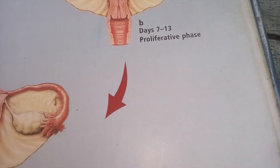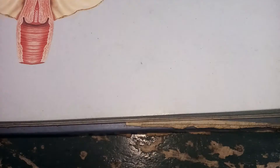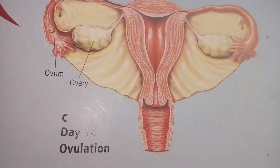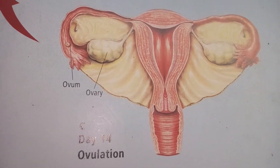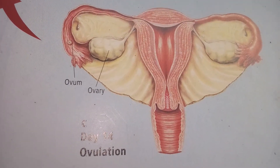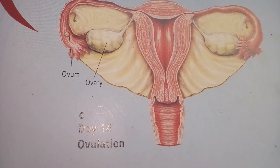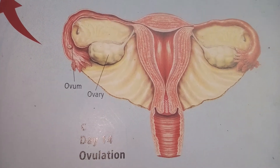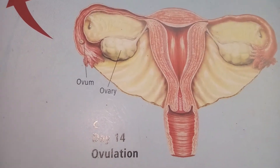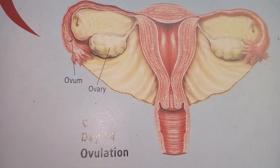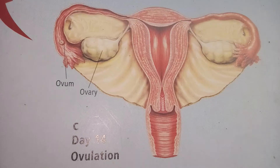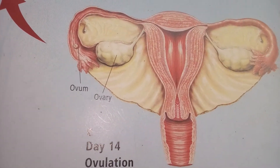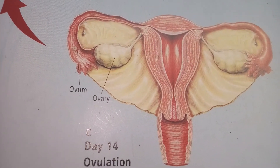Then from there to the time of ovulation — that is the 14th day. This is where pregnancy takes place, at least from the 12th to the 14th day. That is where an ovum is released from the ovary sac.